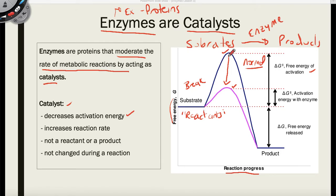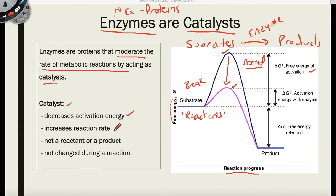It's kind of like taking a very steep hill and shrinking it to a much smaller hill. Now because you have this much smaller hill, the activation energy with the enzyme — the delta G — is going to be smaller. That means that because you have less energy to overcome to turn reactants into products, the reaction is going to happen a lot faster. This increases the reaction rate, and that's what enzymes do: they make reactions go faster by decreasing the energy of activation.